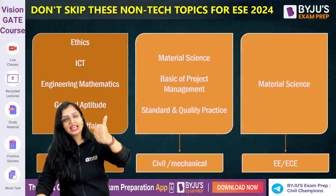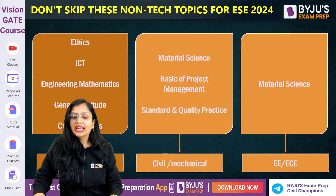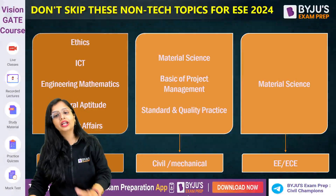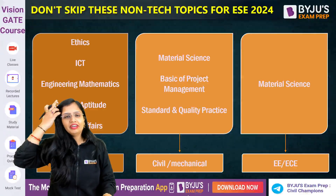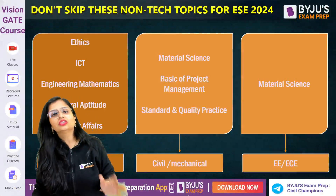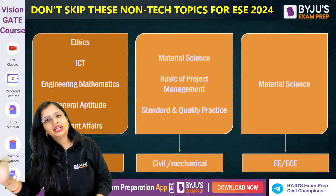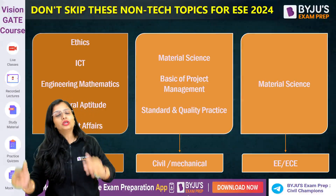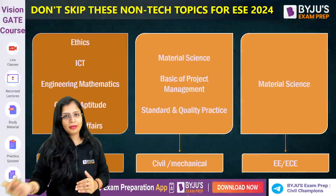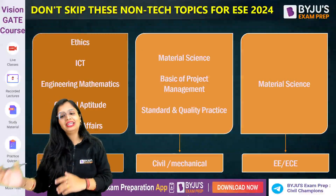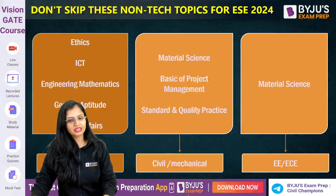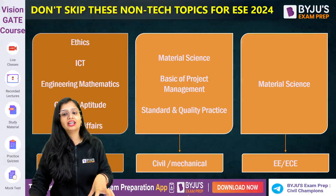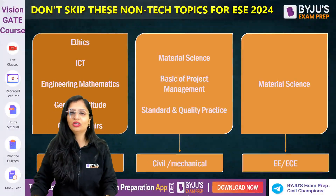Apart from those five, if you are from Civil or Mechanical branches, you must also study: Material Science, Basis of Project Management, and Standard and Quality Practice — do not skip these. For Material Science, about 70% was already covered in your 12th standard, so only 30% remains. For EE or ECE branches, do not miss Material Science. Ethics, ICT, Engineering Math, General Aptitude, and Current Affairs are for all; the three additional topics are specifically for Civil and Mechanical.